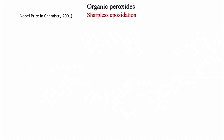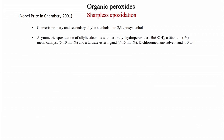Now we will discuss Sharpless epoxidation. Sharpless, Noyori, and Knowles shared the Nobel Prize in 2001 for discoveries in asymmetric catalysis. Sharpless received it mainly for his epoxidation and osmylation (dihydroxylation) reactions. Sharpless epoxidation converts primary and secondary allylic alcohols into 2,3-epoxy alcohols. The reagents are: tert-butyl hydroperoxide as the peroxo compound, titanium(IV) catalyst (5–10 mol%, typically titanium isopropoxide), and a tartrate ester ligand (D- or L-tartrate chiral ester, 7–15 mol%).